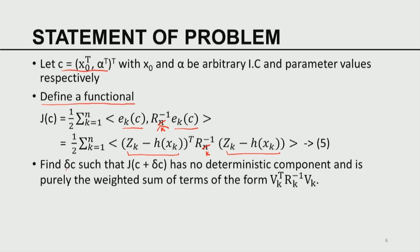Our goal is to find a perturbation delta_C such that when we change C to C + delta_C, J(C + delta_C) has no deterministic component and is purely a weighted sum of terms induced by the noise. Delta_C consists of delta_x_0 for the initial condition and delta_alpha for the parameters. We want to add corrections to the initial conditions and parameters so as to annihilate the deterministic part of the forecast error, leaving behind only the weighted sum of squared errors of Gaussian random variables.